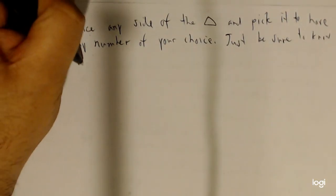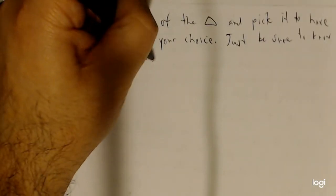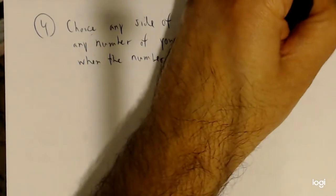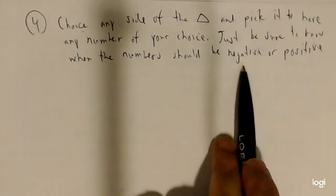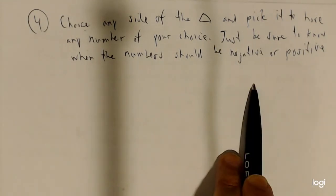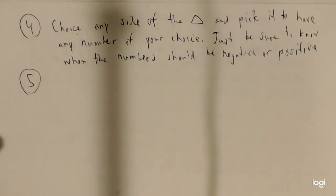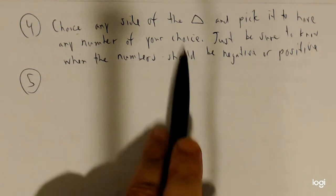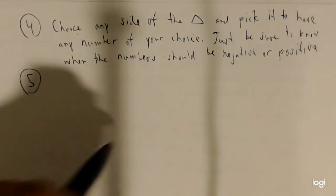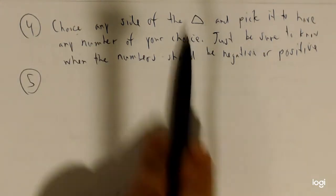Be sure to know when numbers should be negative or positive. Moving left means x is negative; moving right, x is positive. Moving up, y is positive; moving down, y is negative. And R is always positive. Step five: the right triangle you've created will be either a 30-60-90 or a 45-45-90. So if you have one side, you can find the other two without any problems.